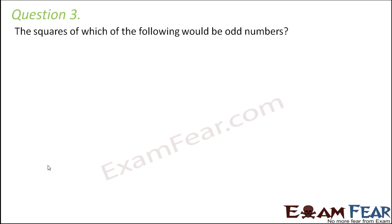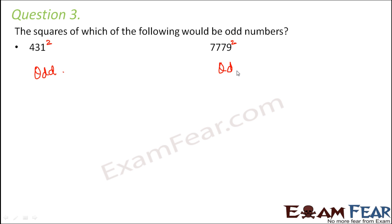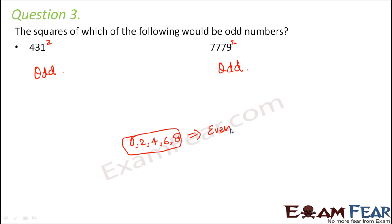Question number 3: The squares of which of the following would be odd numbers? We are given two numbers and have to tell if their squares would be odd or not. We have learned that the square of an odd number is always odd, and the square of an even number is always even. Looking at the first number, 4, 3, 1 — is it odd or even? This is odd, so its square would also be odd. Similarly, 7, 7, 7, 9 — this is again odd, so its square will again be odd. Any number which ends in 0, 2, 4, 6, or 8 is an even number; all others are odd numbers.